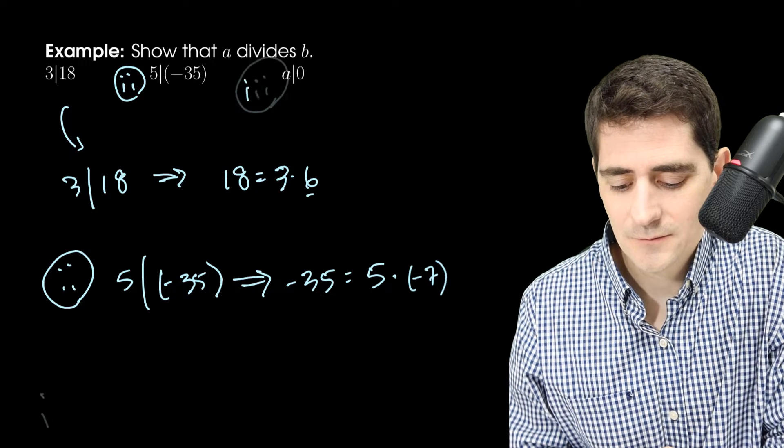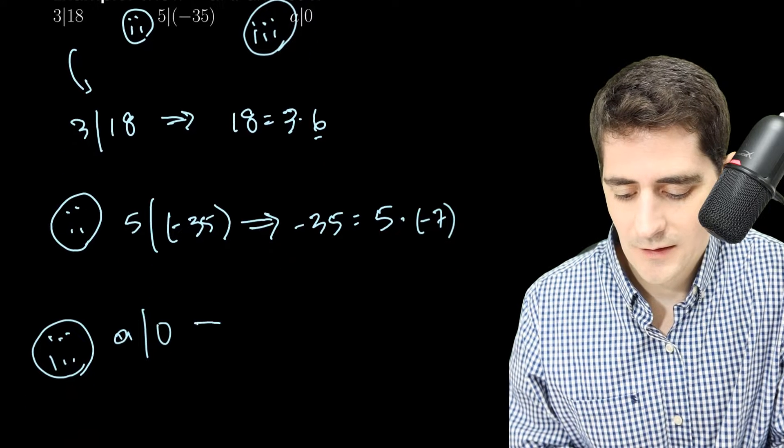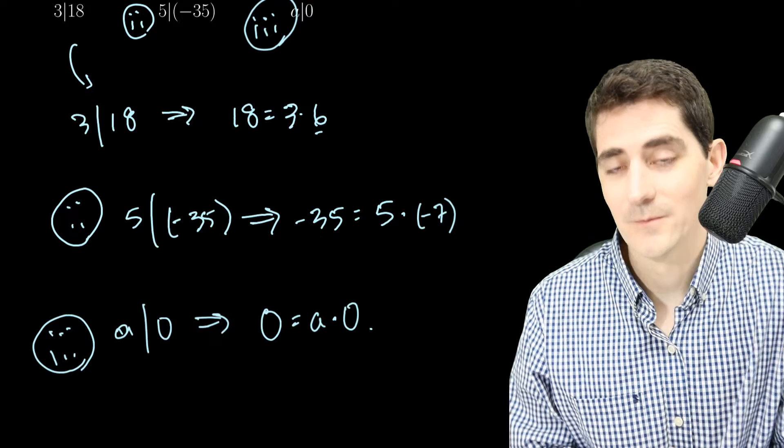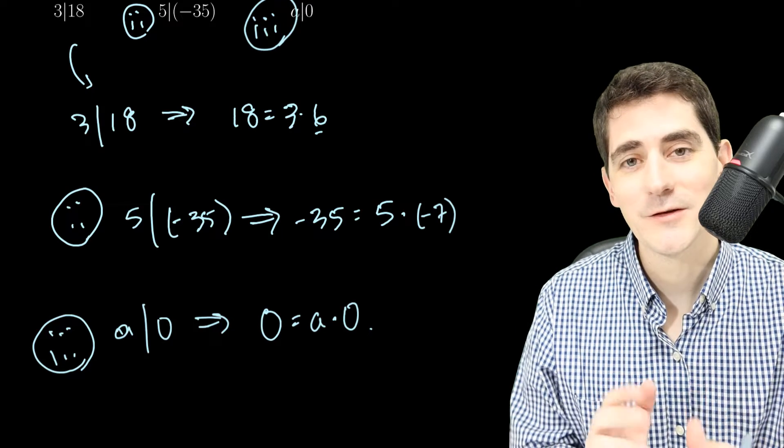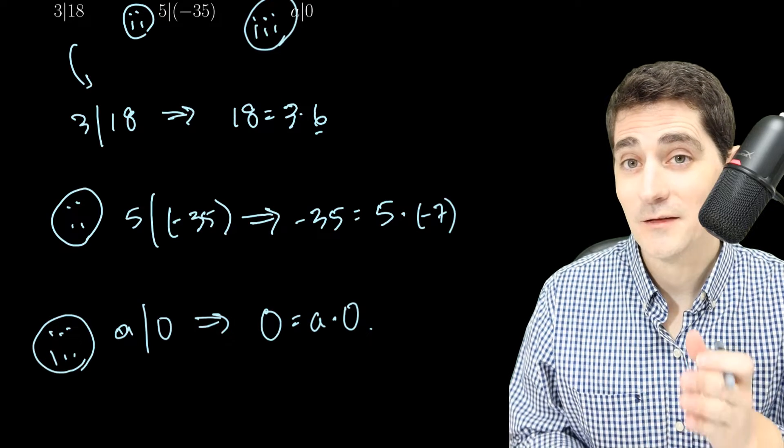And thirdly, we have A divides 0. That's true because 0 is A times 0. 0 is an integer. So A times an integer gives me 0, which means that A divides 0.